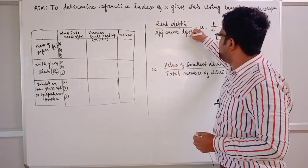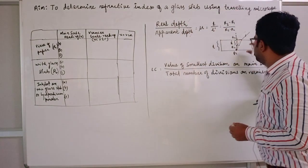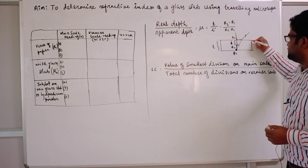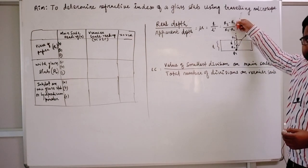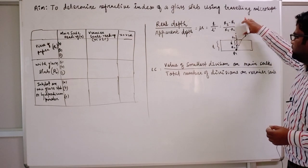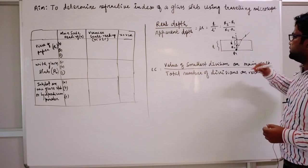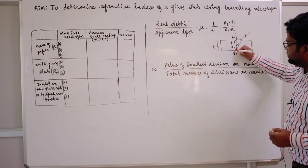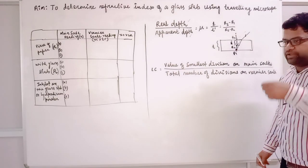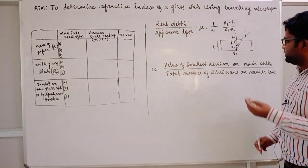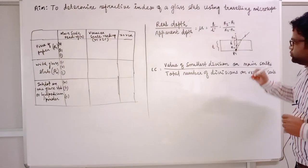Our formula is real height divided by apparent height. Let's say this is your glass slab — we will keep it under the traveling microscope. We will first mark one point over a piece of paper and try to focus it without the glass slab.